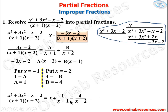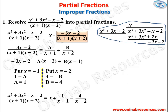Substituting A = 1 and B = −4, the full result for Problem 1 is: (3x³ + 3x² − x − 2) / [(x+1)(x+2)] = x + 1/(x+1) − 4/(x+2). That's the end of Problem 1.